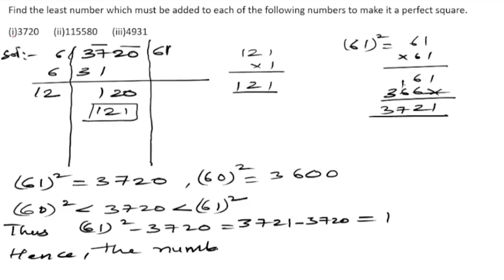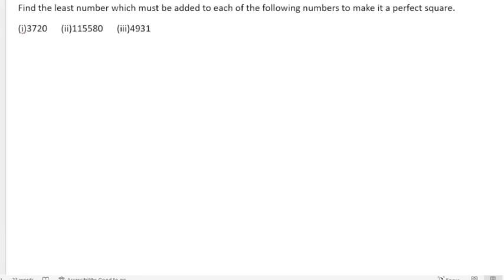3721 minus 3720 equals 1. Hence, the number to be added is 1. Now let us do the second part, where we are given 115580.